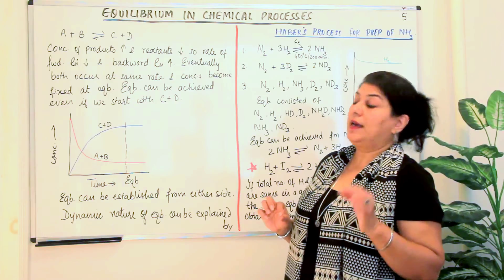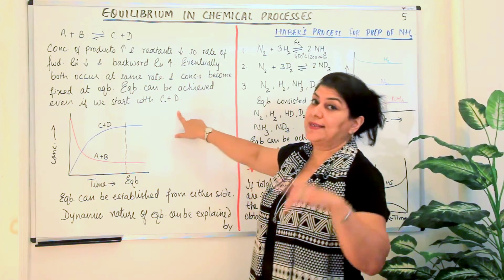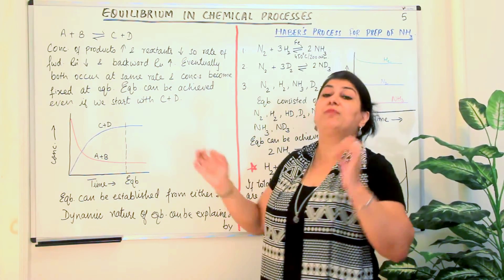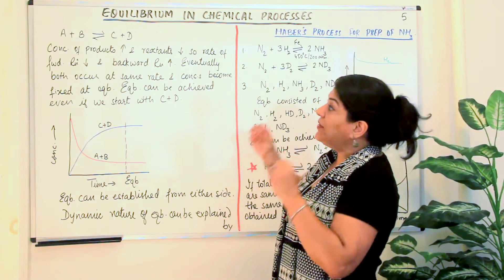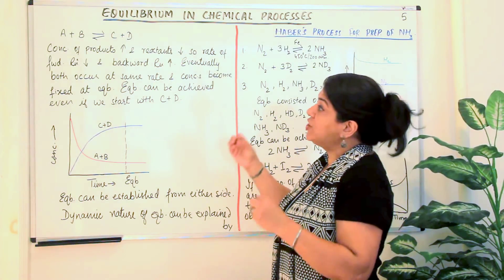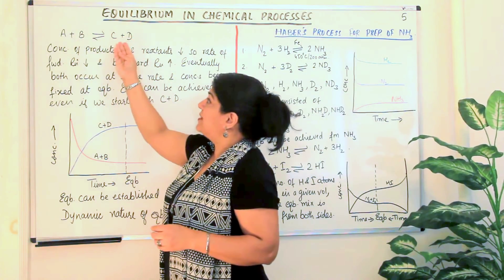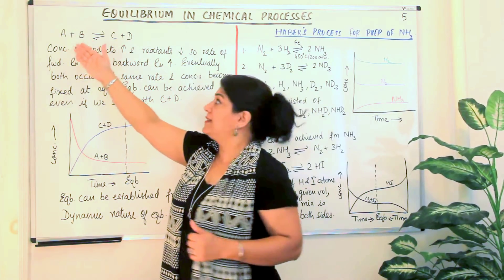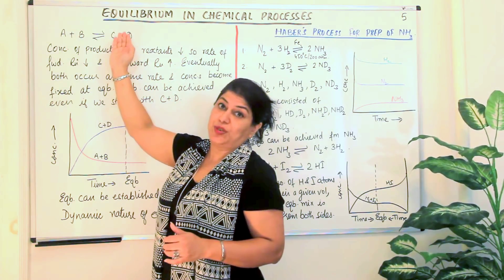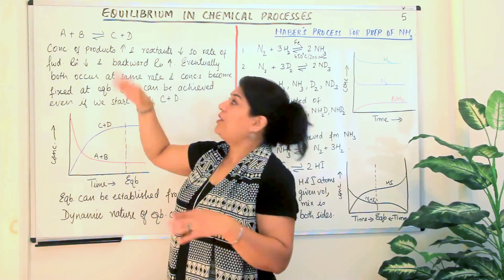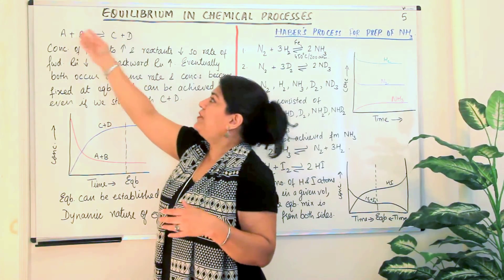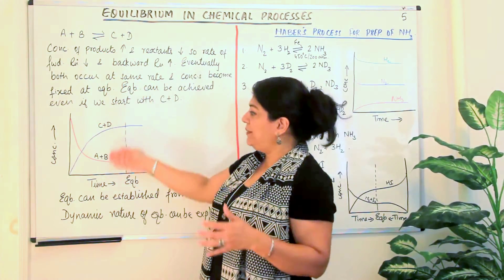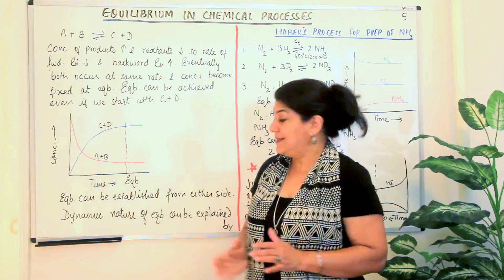It is worth emphasizing again that equilibrium can be established from both sides because it is a reversible change. Whether you take A and B as reactants or C and D as reactants, the equilibrium will still be established and it will be the same equilibrium.